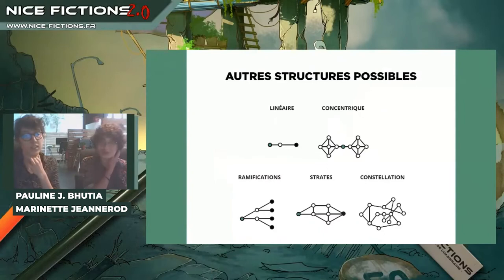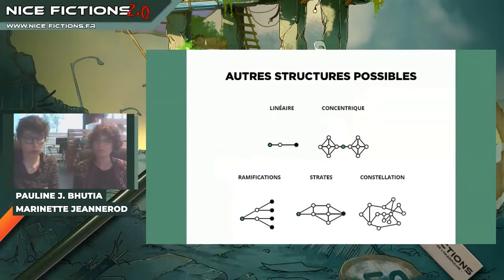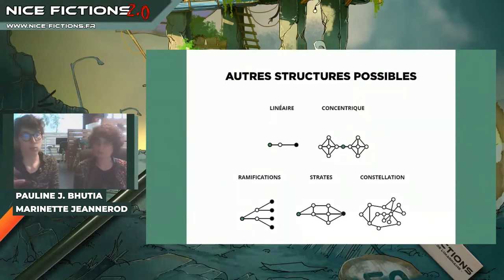Ensuite, on a une structure concentrique avec un début et pas du tout de fin. C'est un peu ce qu'on peut retrouver dans les web documentaires, où on est projeté quelque part et c'est à nous de voir où on veut aller. Il n'y a pas vraiment de fil d'histoire — on peut découvrir une ville, par exemple. Réfugié République est un projet comme ça, un web documentaire où on découvre un camp de réfugiés et on apprend des histoires en s'y déplaçant.